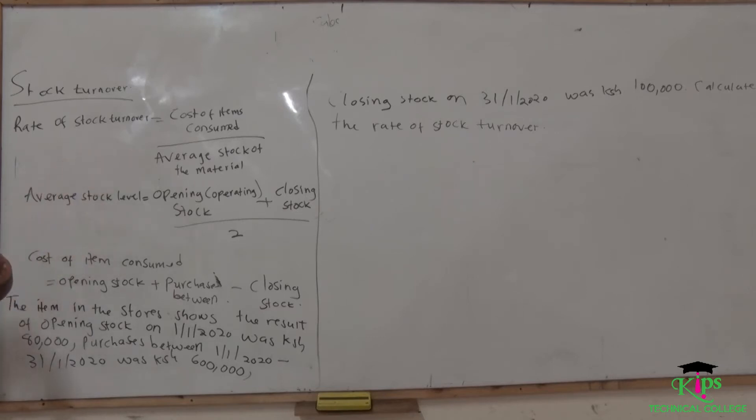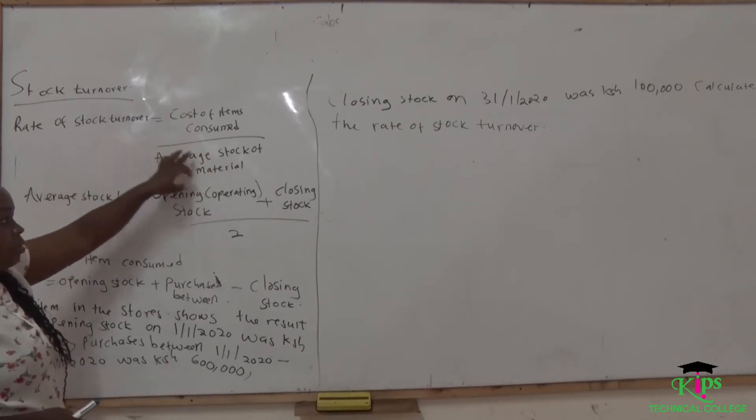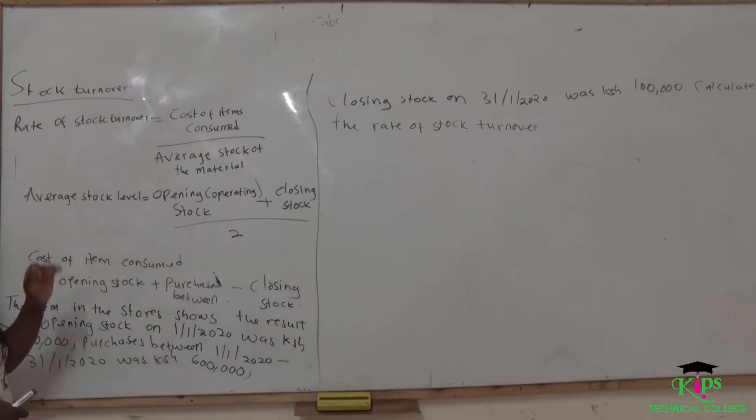When you are calculating rate of stock turnover, you use this formula which is cost of item consumed divided by average stock of the material. The cost of item consumed, you can be given or it can be left out for you to calculate it. If you are taught to calculate the cost of item consumed, it will be opening stock plus purchases minus closing stock. That is the formula. And average stock level, how we calculate it, you take opening stock plus closing stock divided by two.